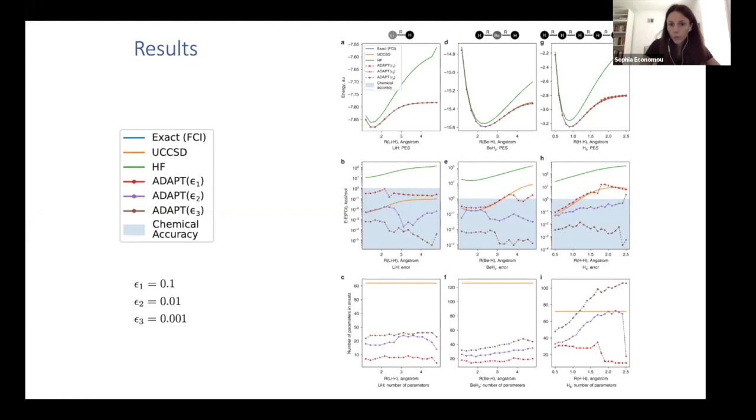And actually we show here that it performs better even in that metric. So here, if I look at the number of parameters that my ansatz has for different interatomic distances, you see that UCCSD is of course flat because it's a fixed ansatz. It doesn't change. However, ADAPT not only changes, but also outperforms UCCSD in some cases by a factor of two or more.